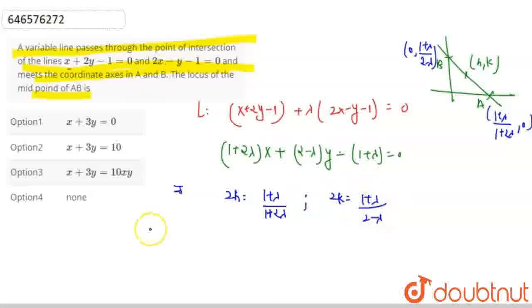Now eliminate lambda. After eliminating lambda, the relation we get is h plus 3k equal to 10hk. Replace h with x and k with y, the equation is x plus 3y equals 10xy. So the answer is option third.